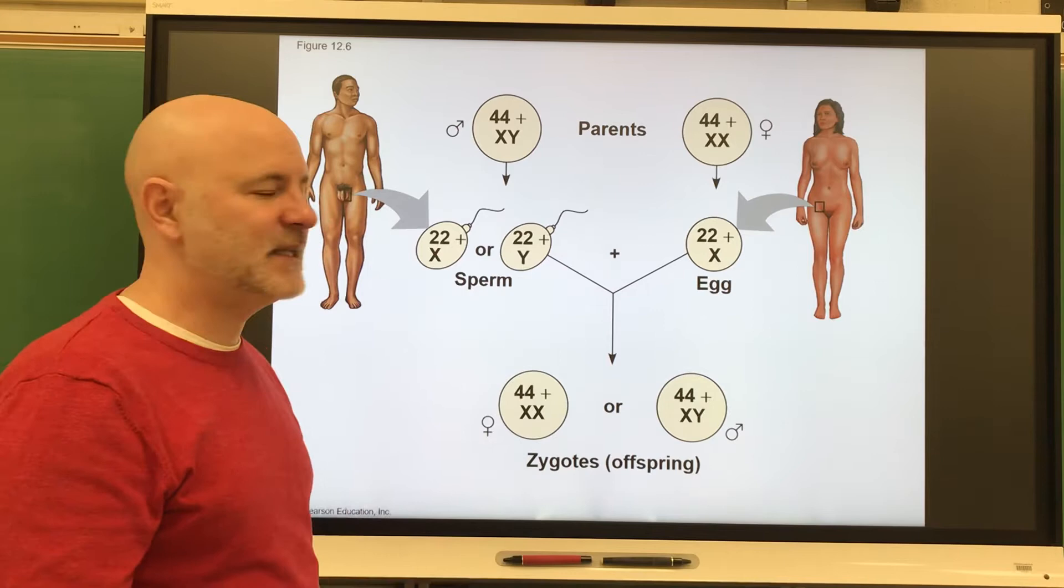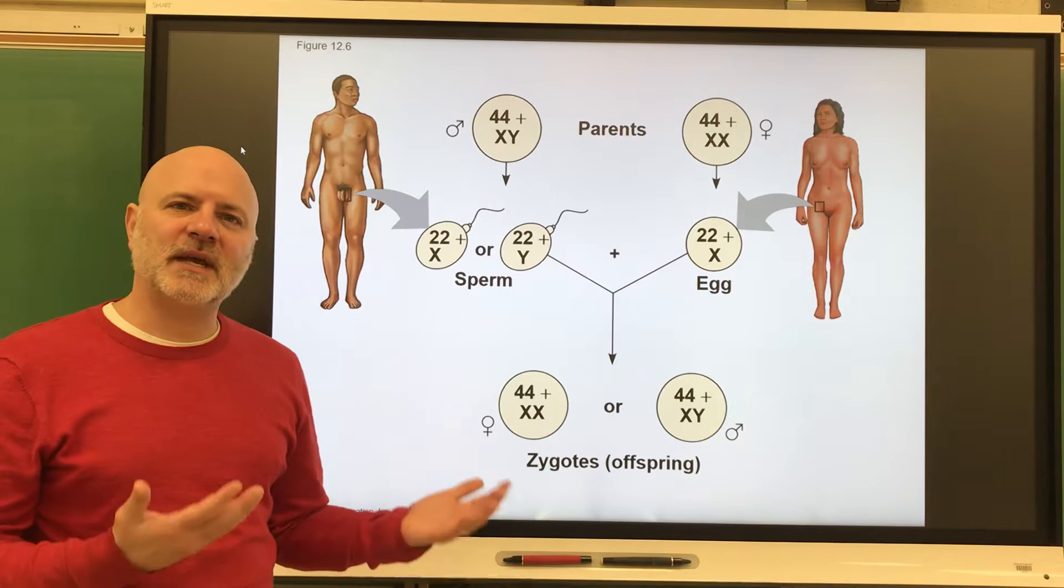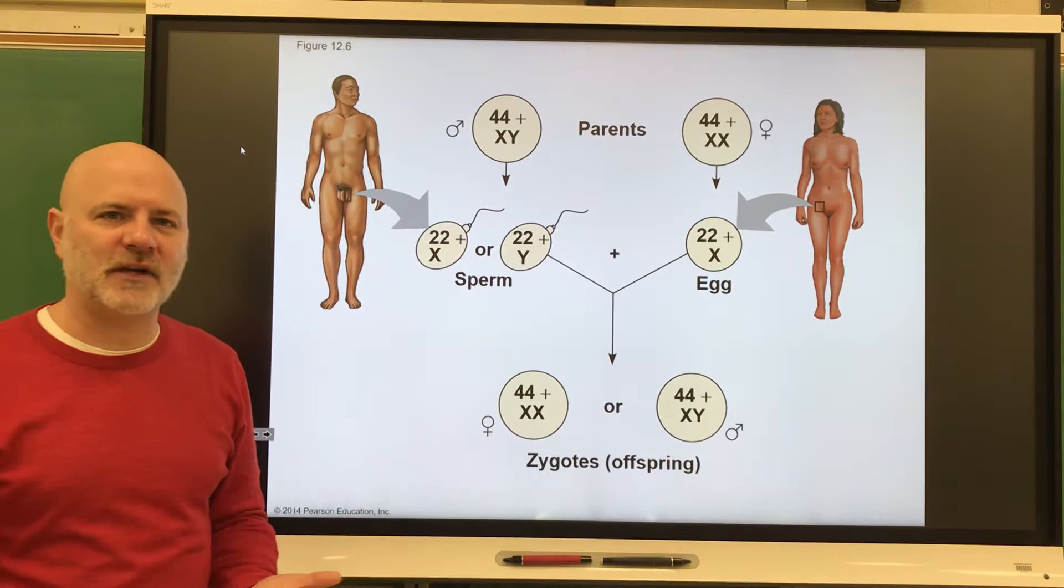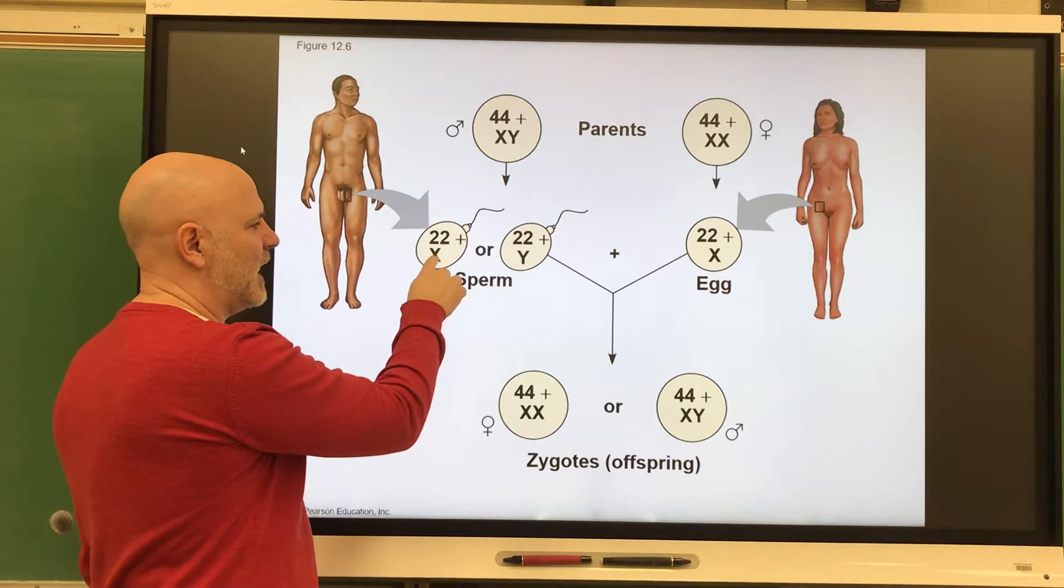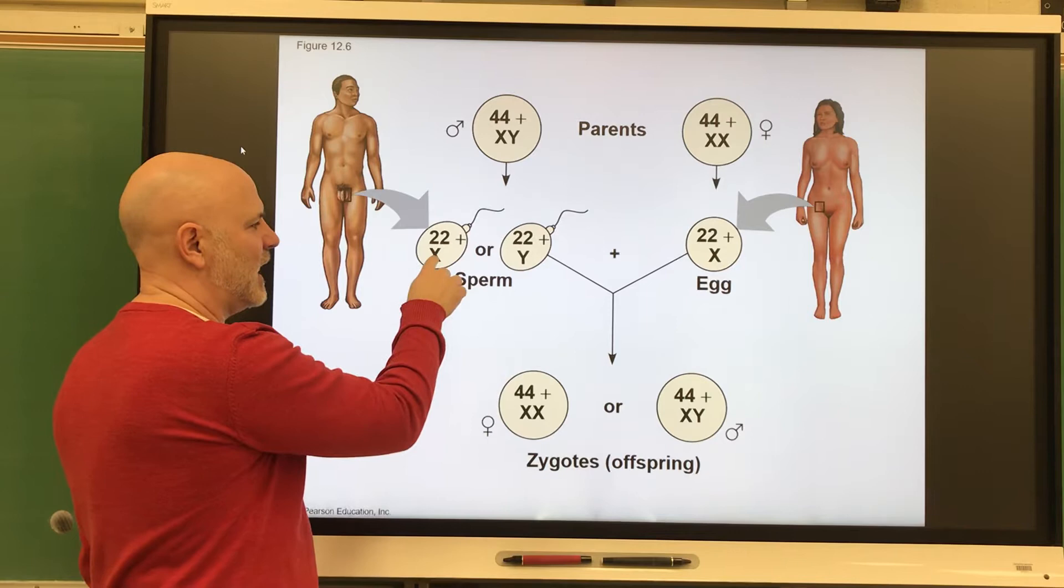When it comes to sex determination for animals that have sex chromosomes, it's the heterogametic sex that determines the sex of the offspring, because the heterogametic sex can give off one chromosome or the other. In the case of mammals, if the guy gives off an X, you have a daughter. If he gives off the Y, you have a son.